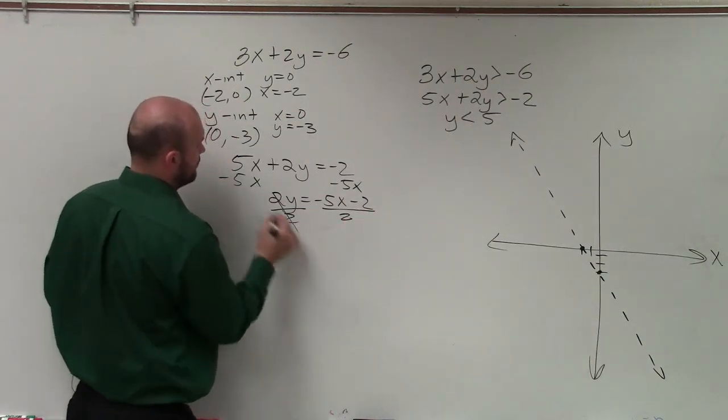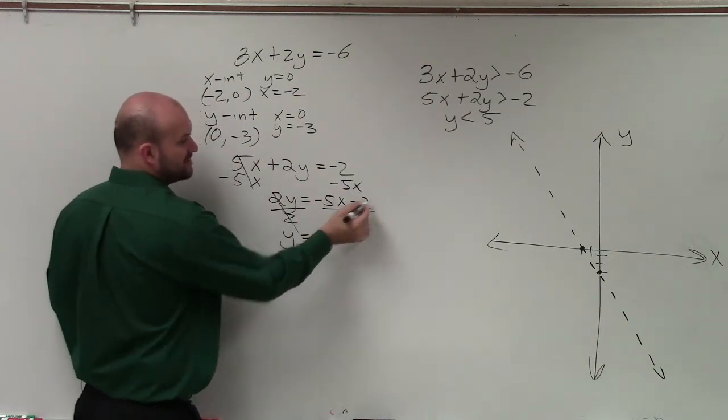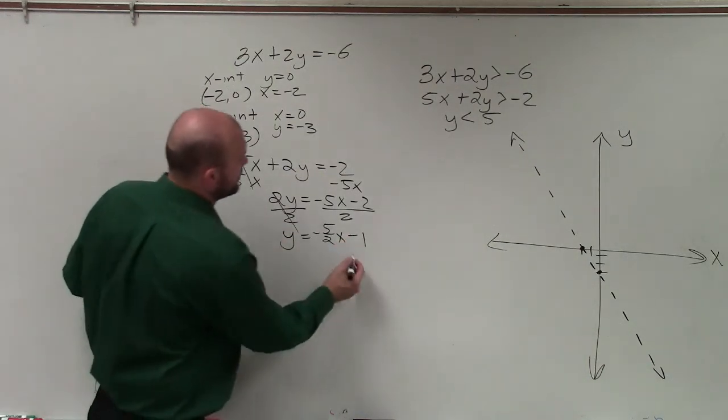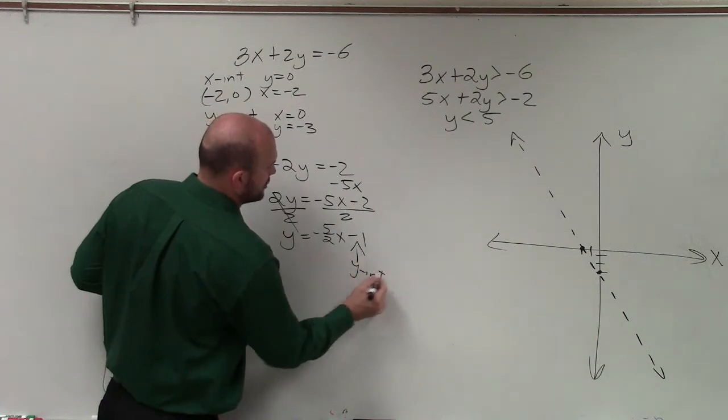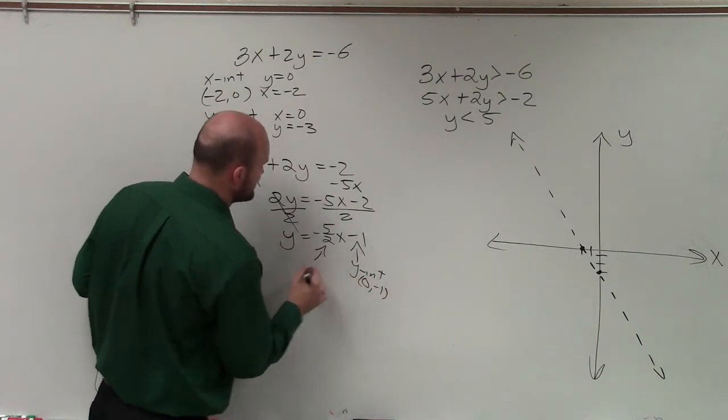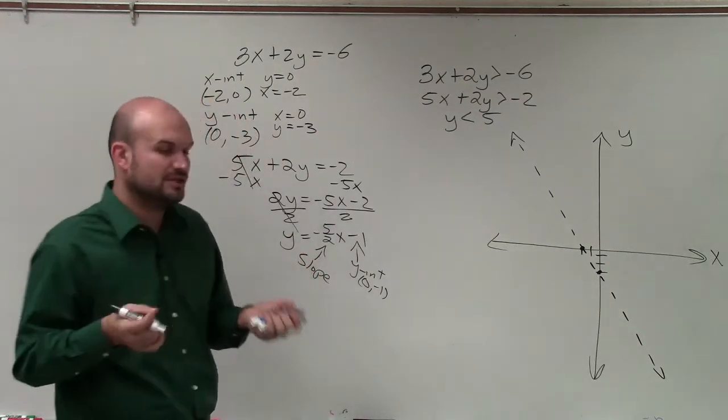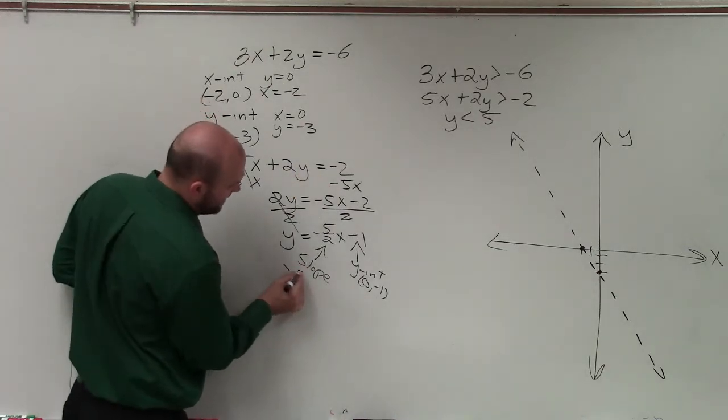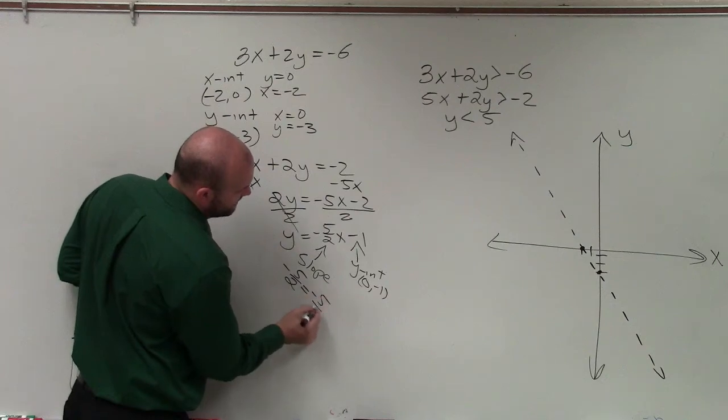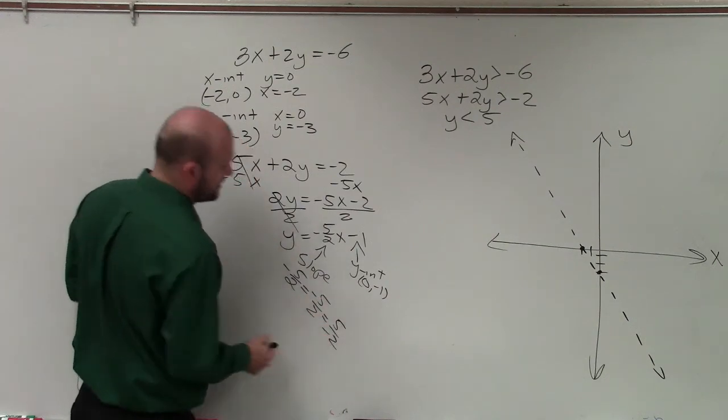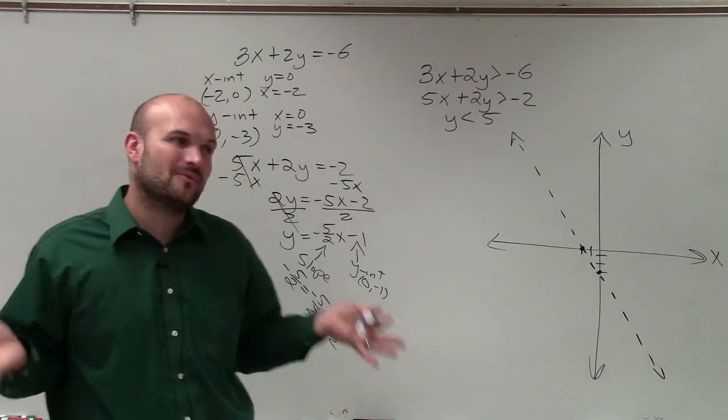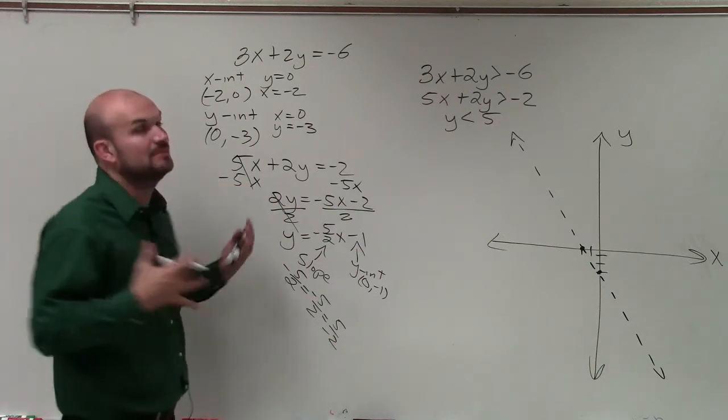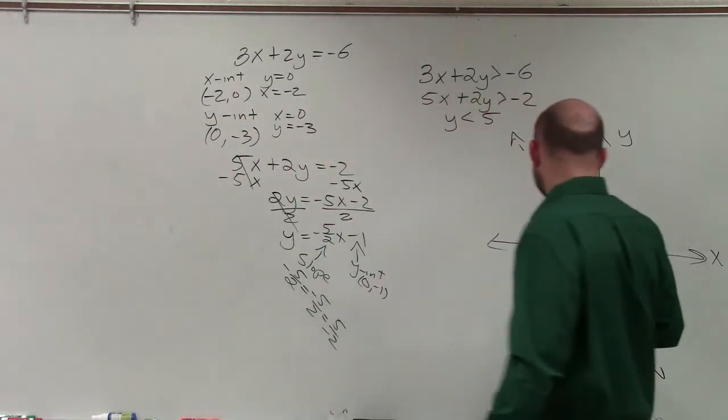And our final answer is y equals, remember, divide the 2 into both of your terms. So I have negative 5 halves x minus 1. Now, remember when graphing, so now I know this is my y-intercept, which is a coordinate point 0 comma negative 1. And here is my slope. And remember, the slope is the ratio between the change in the y over the change in the x for your y-coordinates over your x-coordinates. And remember, when you have a negative 5 half slope, remember, we can rewrite that as negative 5 halves or 5 over negative 2.